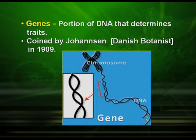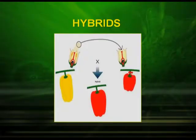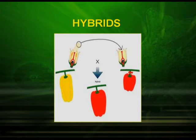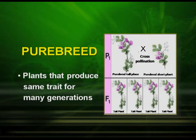What are genes? Genes are the portions of DNA that determine characters. The term was coined by Johansson, a Danish botanist, in 1909. Another important term is hybrid — a cross between two plants, such as yellow crossed with red, produces a hybrid that is somewhat in between the two parents. Pure breeds are plants that produce the same trait for many generations, such as a pure tall plant and a pure dwarf plant.